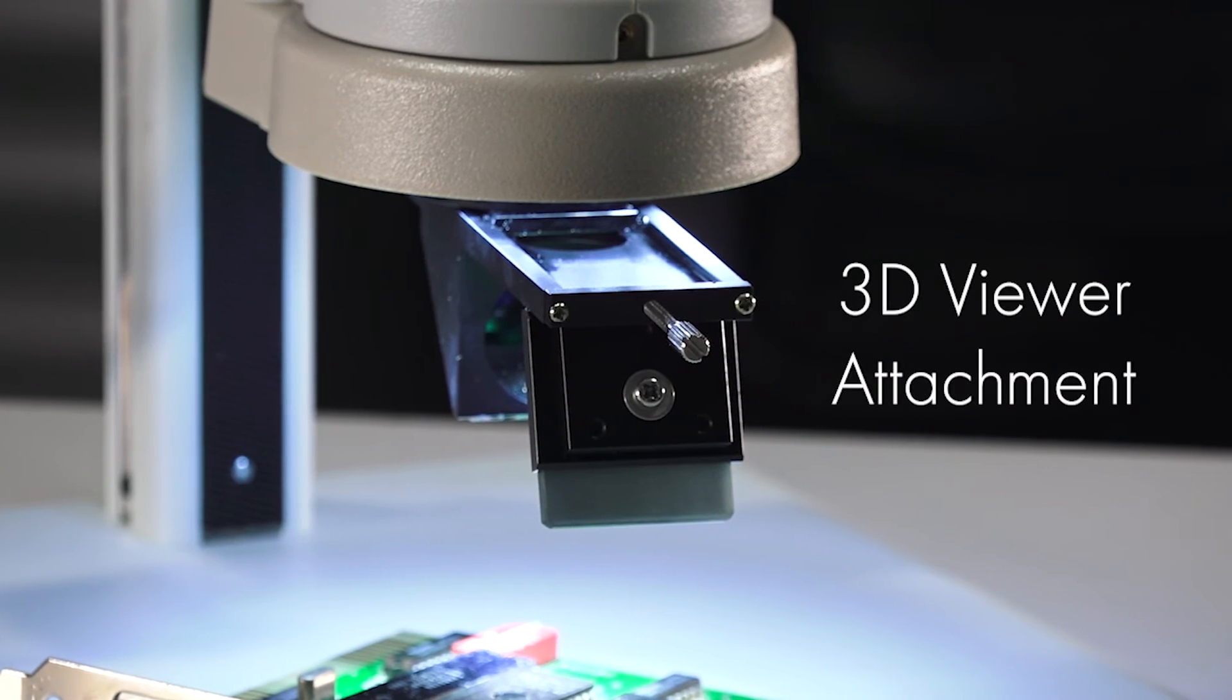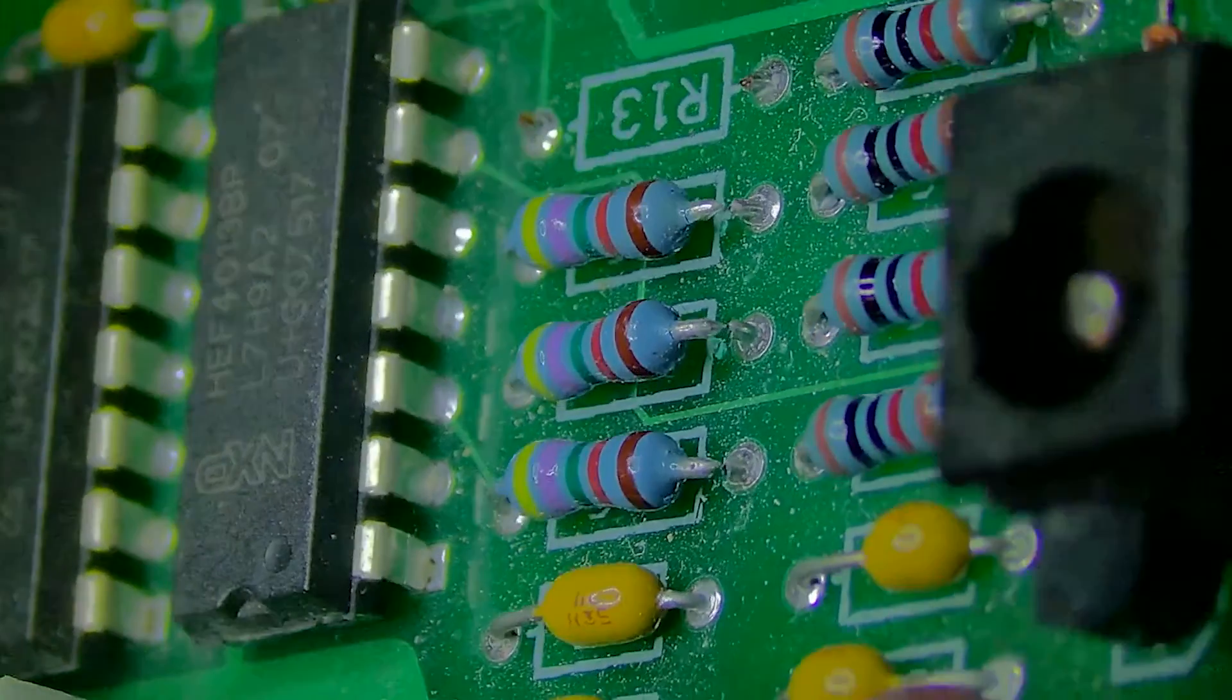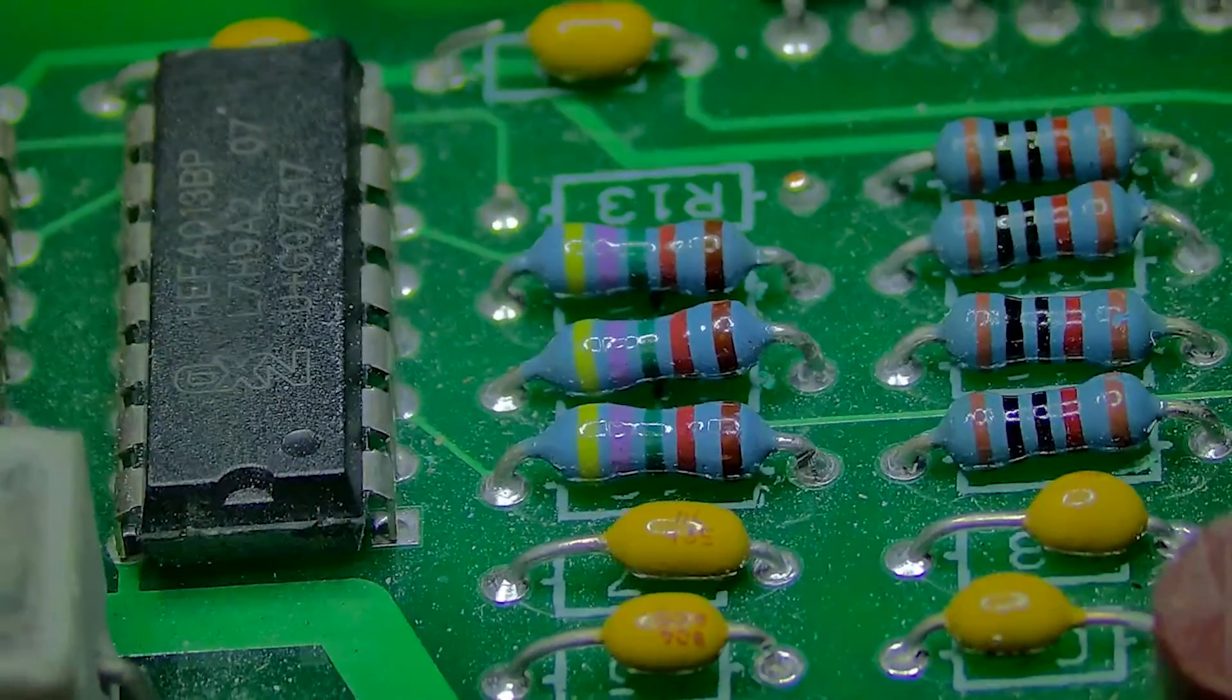The MicroView 3D viewer attachment provides an angled view of objects, ideal for printed circuit boards and other multi-layered pieces.